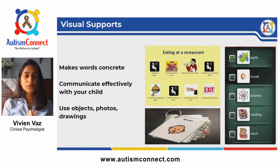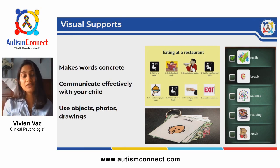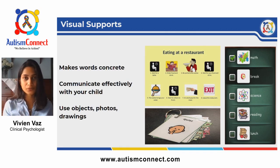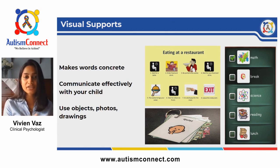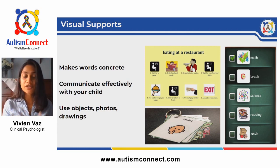The reason signs are used in addition to words is so that everyone — even those who can't read — will know what is expected. In autism, visuals are the best way to communicate with your child. Visual cues are concrete — your child can look at the visual symbol for as long as they like, and it does not vanish like spoken words do. You can write down rules and expectations for any situation, and visual supports will help your child understand what is expected of them.